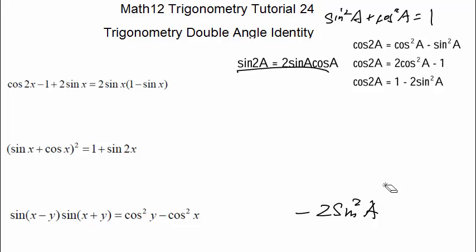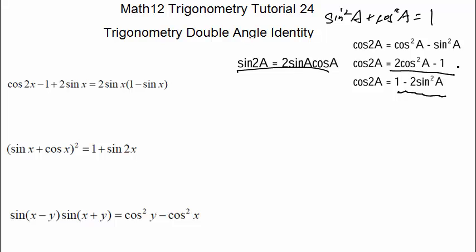Let's look at the first example: simplify cosine 2x minus 1 plus 2 sine x. Cosine 2x can equal cosine²x minus sine²x, or 2 cosine²x minus 1, or 1 minus 2 sine²x. I want to use the third form — 1 minus 2 sine²x — because we already have a minus 1 in the expression, so the '1' will cancel nicely.